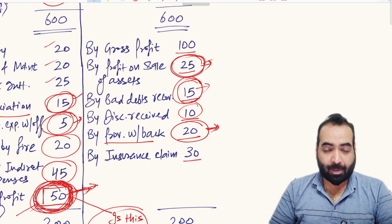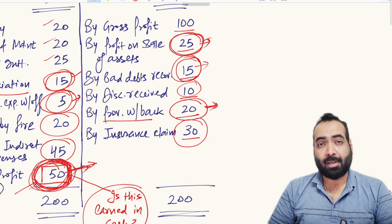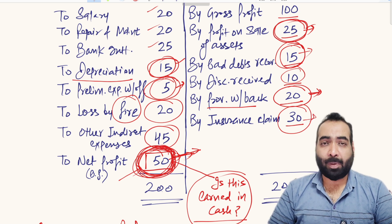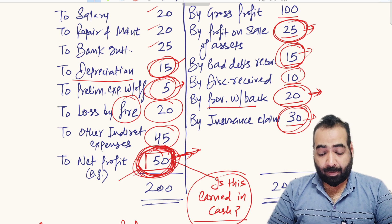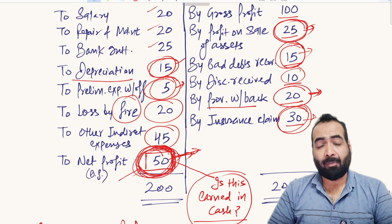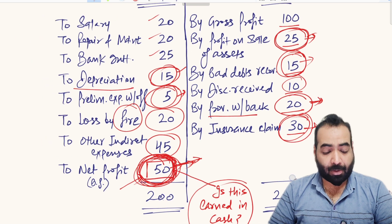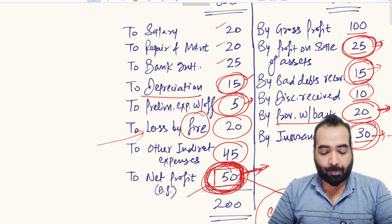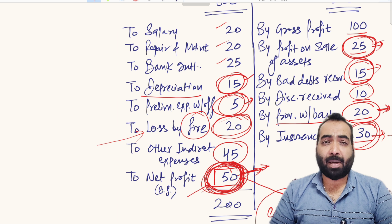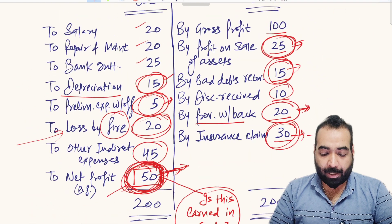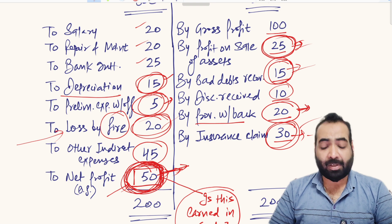Discount received is a general income that we continually earn in the business. On the expense side, the loss by fire of rupees 20 is an exceptional expense. We cannot say every year there will be a loss by fire of rupees 20 — fire cannot happen every year. This is an exceptional situation that occurred to the entity. So these four items — profit on sale of assets, bad debts recovered, insurance claim, and loss by fire — are exceptional and extraordinary in nature, and have all impacted the net profits.